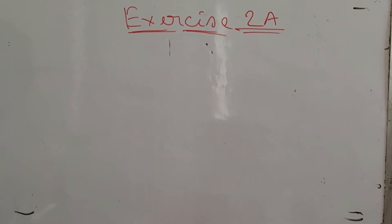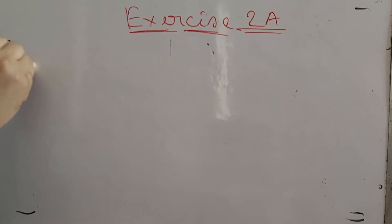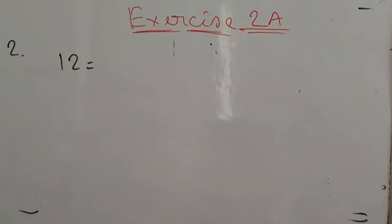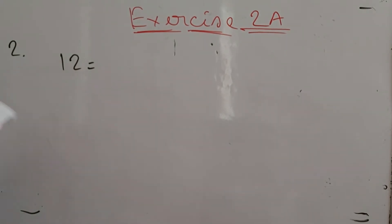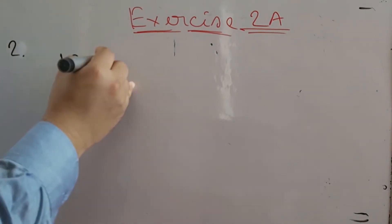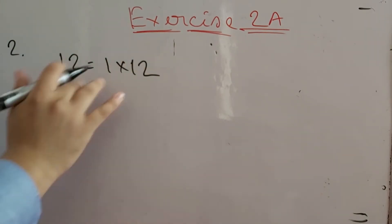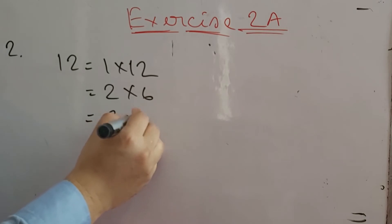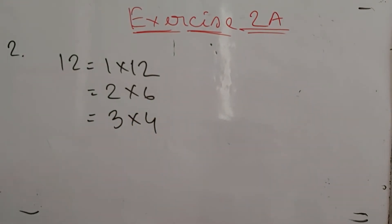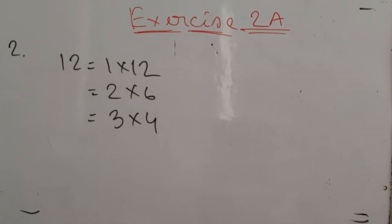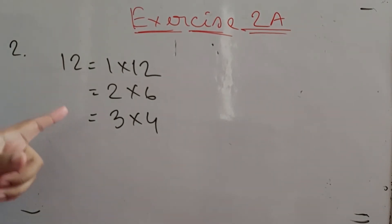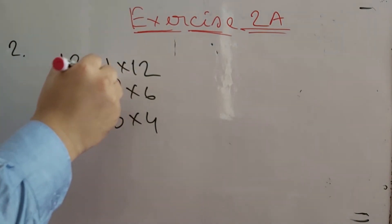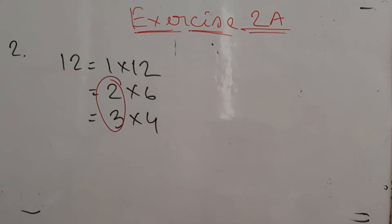Number 2 says: give the prime factors of 12, 36, and 60. You can solve this in two ways. For 12, first find all the factors: 1 × 12, 2 × 6, 3 × 4 — so the factors of 12 are 1, 2, 3, 4, 6, and 12. The prime factors here are only 2 and 3.